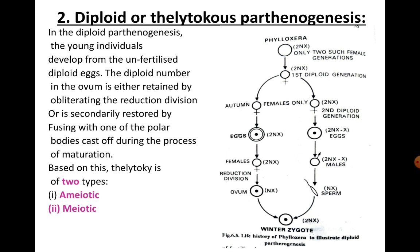The second type is diploid or thelytoky. Here, young individuals develop from unfertilized diploid eggs. The diploid number in the ovum is either retained by obliterating the reduction division, or is secondarily restored by fusing with one of the polar bodies cast off during maturation. Based on this, thelytoky is of two types: apomictic (ameiotic) and meiotic.